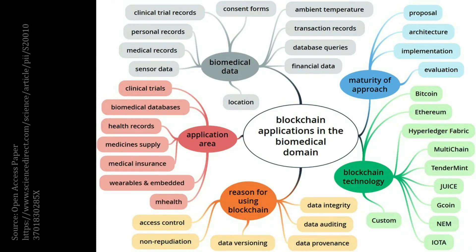These bubbles here are research questions and these are some sub-themes under each of the different research questions. Our next task is to get to this stage. You have to get to the stage where we have your SLR in the middle, your research questions that you have identified, and then a thematic map or a knowledge map based upon that information.